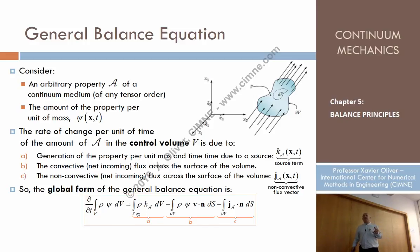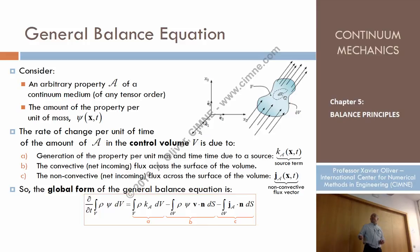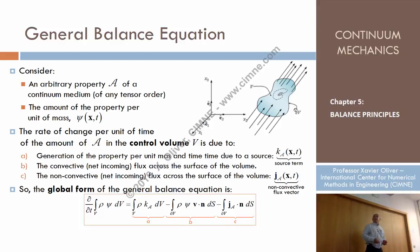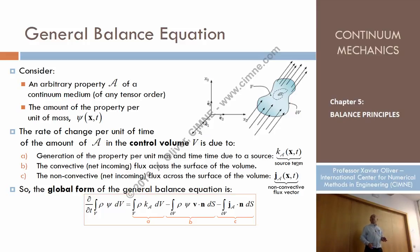What is this change due to? First, the particles inside the domain are generating property due to sources — for instance, heat in a concrete hardening process. So imagine that the amount of the property generated per unit at the particles inside the domain can be expressed by a function, which is what we call the source term.